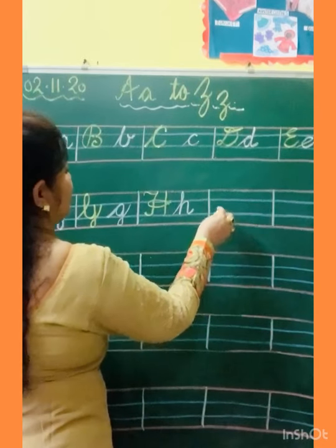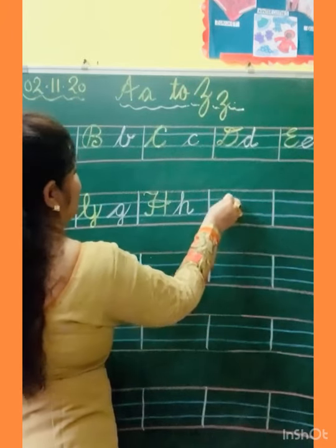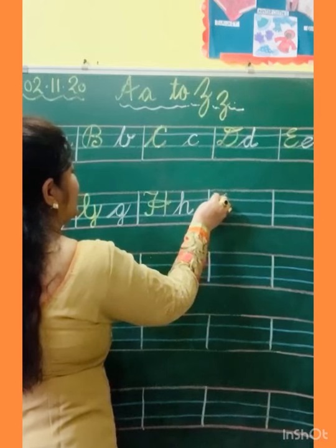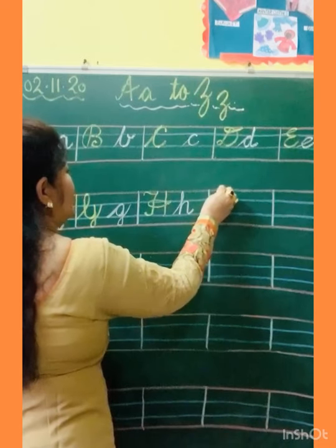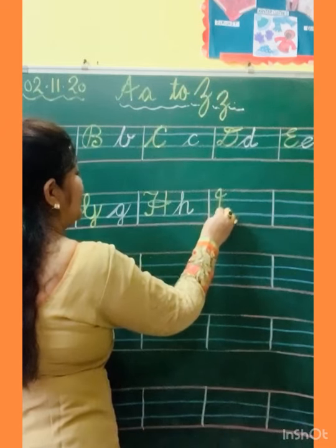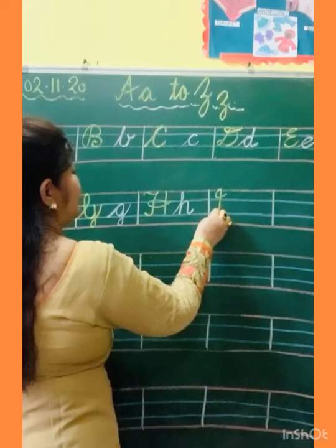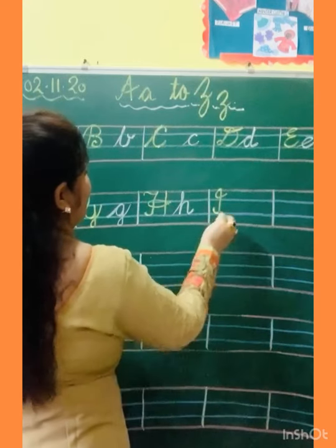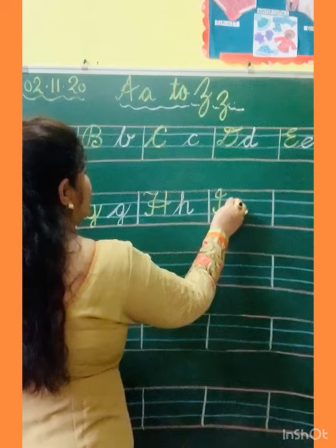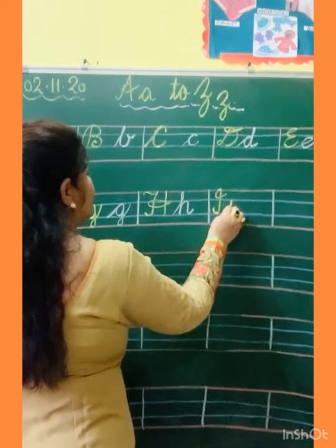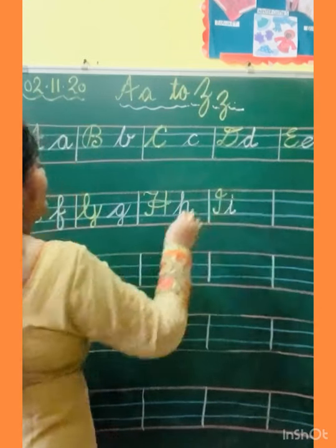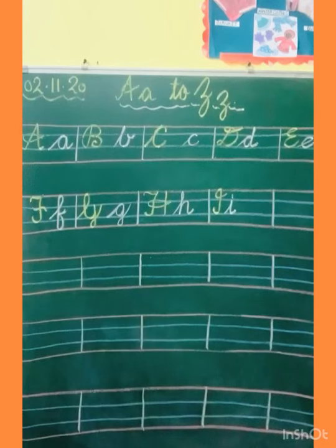Now I. How to make capital I? Slanting, go up, standing line, touch the line, and kick. This is capital I. And how to make small I? Slanting, standing line, kick, and one dot. This is small I.